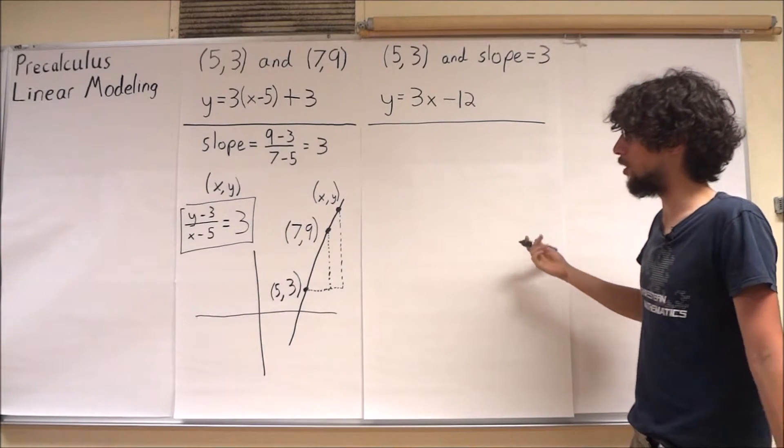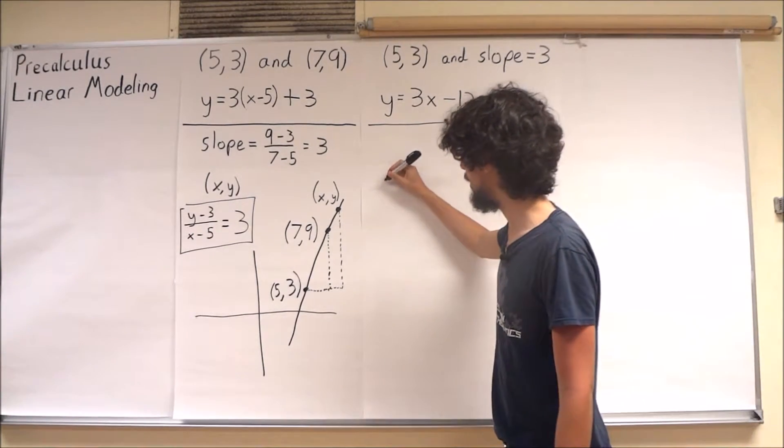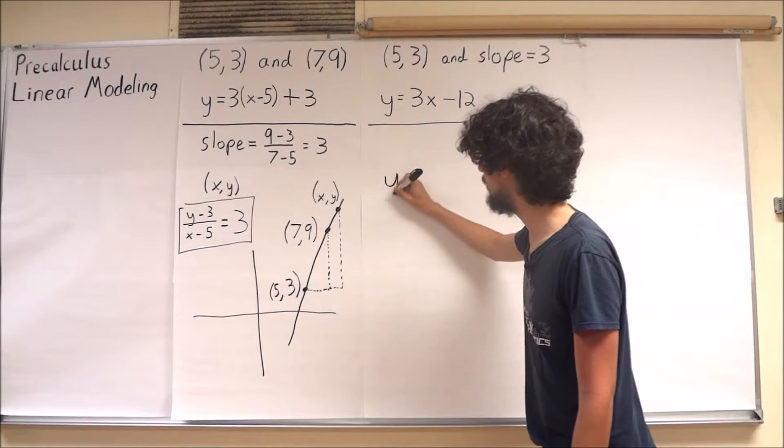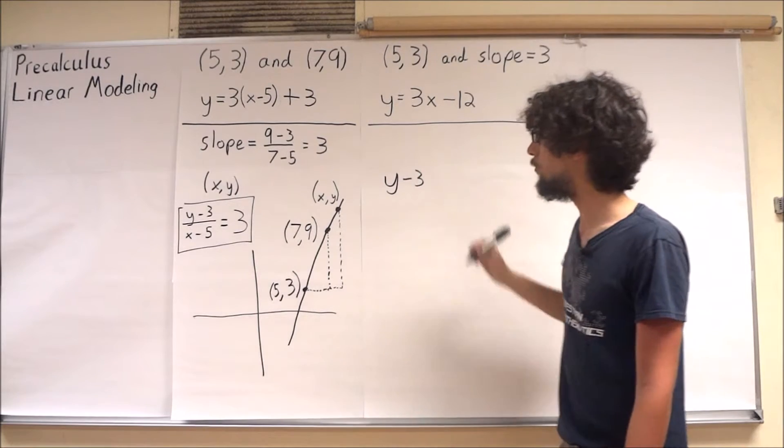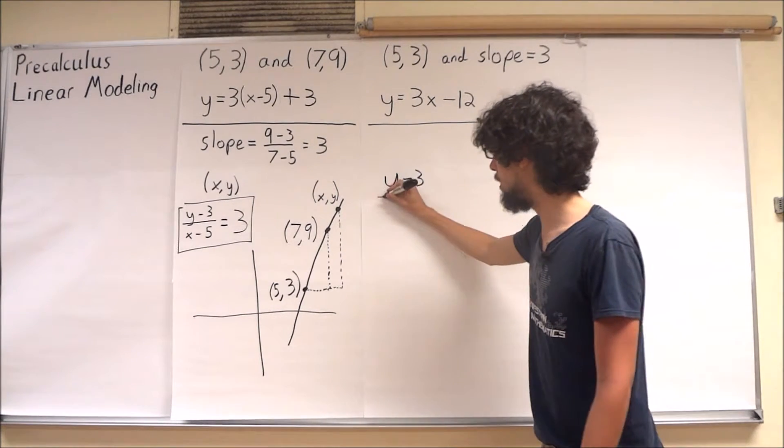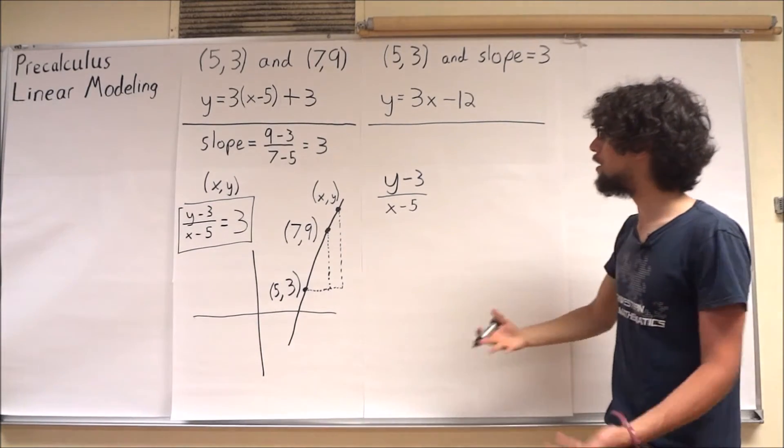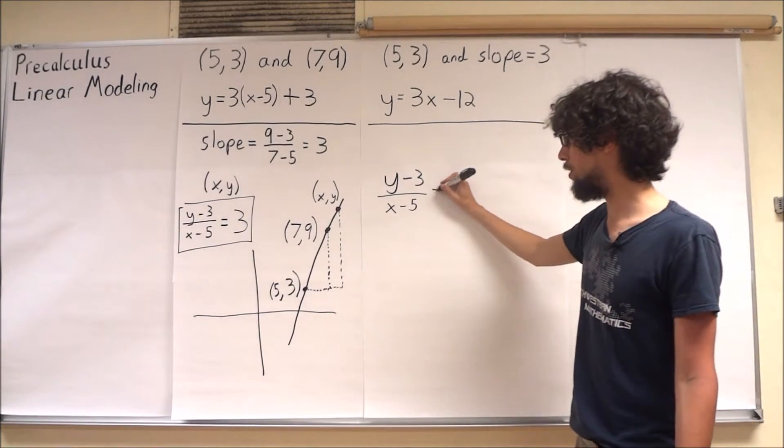So in other words, I can again simply write down that between x, y and 5, 3, I have a rise of y minus 3 and a run of x minus 5, and this slope should be equal to 3.